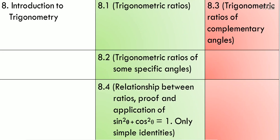Lesson 8: Introduction to Trigonometry. Exercise 8.1 is about trigonometric ratios. Exercise 8.2 covers trigonometric ratios of some specific angles. Exercise 8.4 has the relationship between ratios, including proofs and application of sin²θ + cos²θ = 1 — only simple identities will be asked. Exercise 8.3 is fully deleted, covering trigonometric ratios of complementary angles. Any questions in exercise 8.4 related to complementary angles will also be removed from the syllabus.